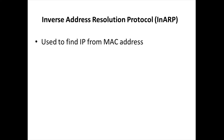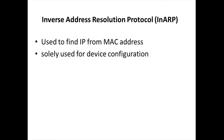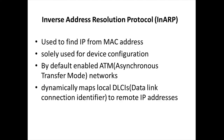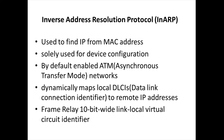Now let's discuss Inverse Address Resolution Protocol (InARP). Inverse ARP is generally used to find an IP address from a MAC address, and it is sometimes used for slow device configuration. Inverse ARP is enabled by default in ATM (Asynchronous Transfer Mode) networks, which is a switching technique. When we configure a frame relay, Inverse ARP dynamically maps the local network in the DLCI format — the Data Link Connection Identifier — which is a 10-bit wide link-local virtual circuit identifier.